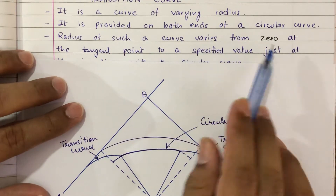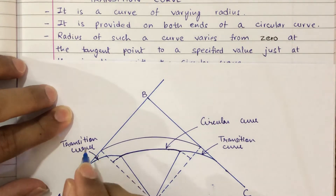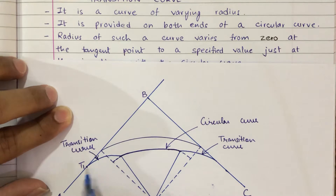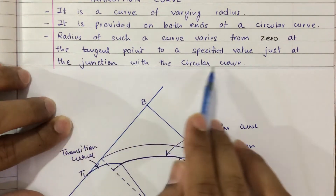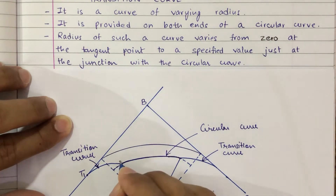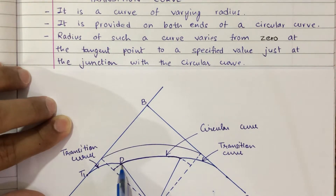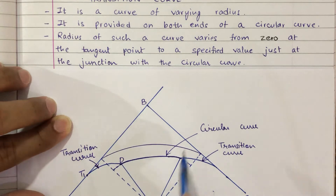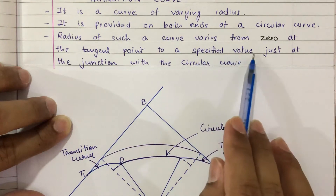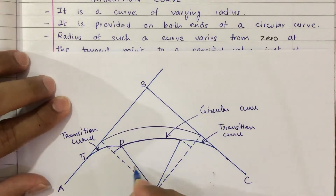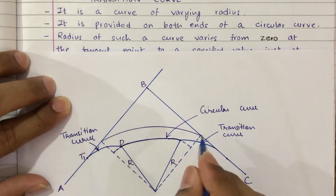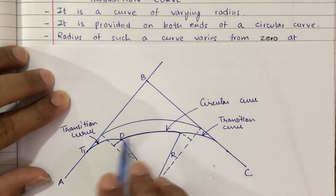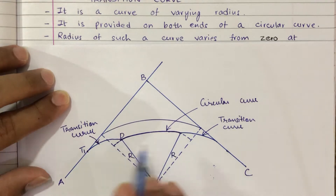The radius of such a curve varies from 0 at the tangent point. Let us call this tangent point as T1. This is the point of curve. So it varies from 0 at the tangent point to a specified value just at the junction with the circular curve. Let us call this junction as D. This is the junction where the transition curve finishes and the circular curve starts. The radius will have a specified value just at the junction with the circular curve — this will be the radius of the circular curve.